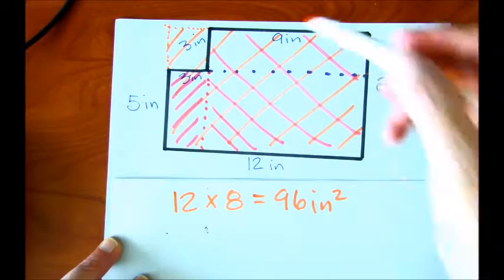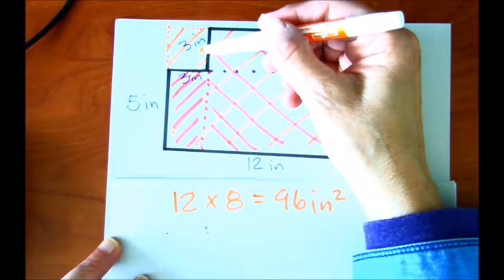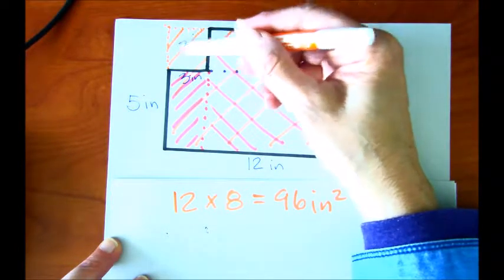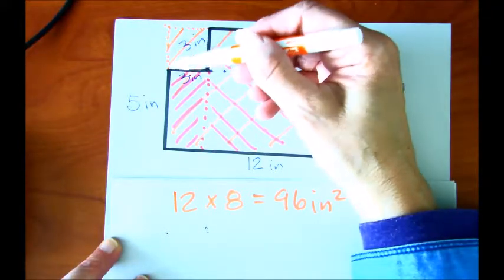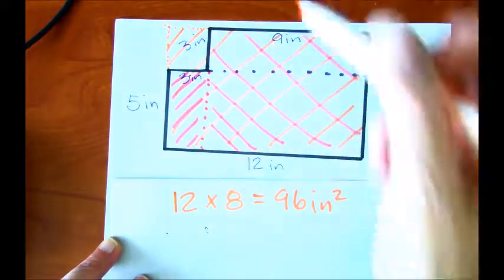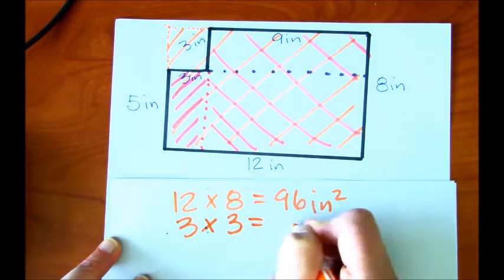So knowing that this part is not really a part of the figure that we're trying to find the area, let's go ahead and subtract this area from the total. And the dimensions of this outside area is 3 and 3. So 3 times 3 is 9.